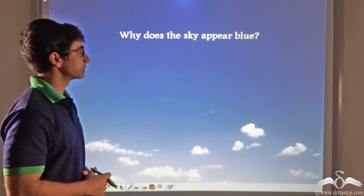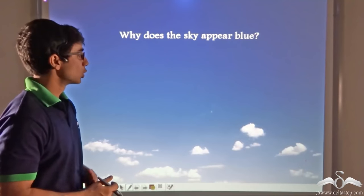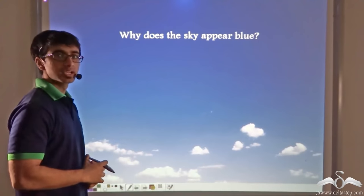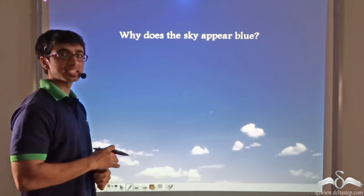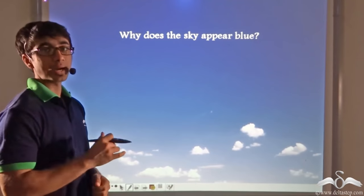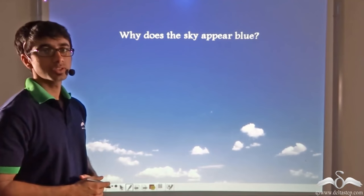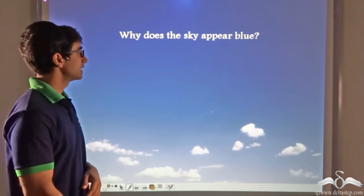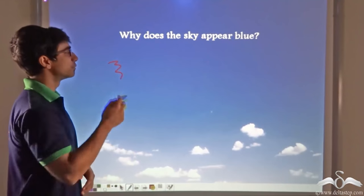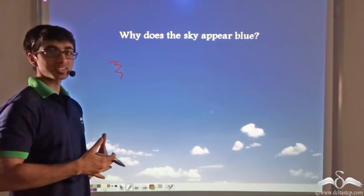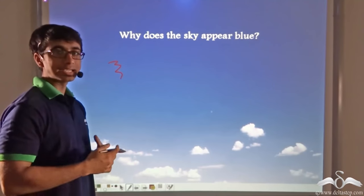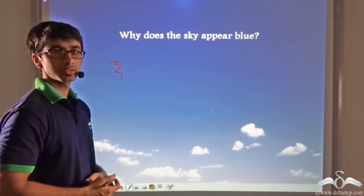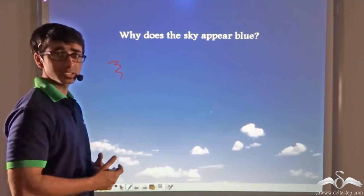Take a look at the picture on the screen. Over here you can see the sky. We have studied that when the Sun gives out light, it gives out white light. But from your day-to-day observations, you have seen that the sky appears blue in color. Now if the Sun is giving out white light, why does the sky appear blue in color? Why does it not appear white in color?